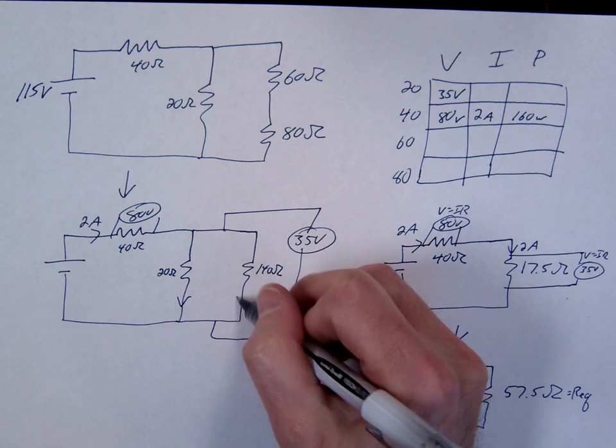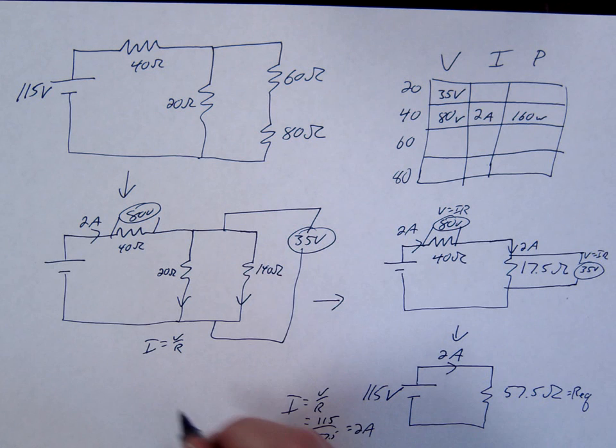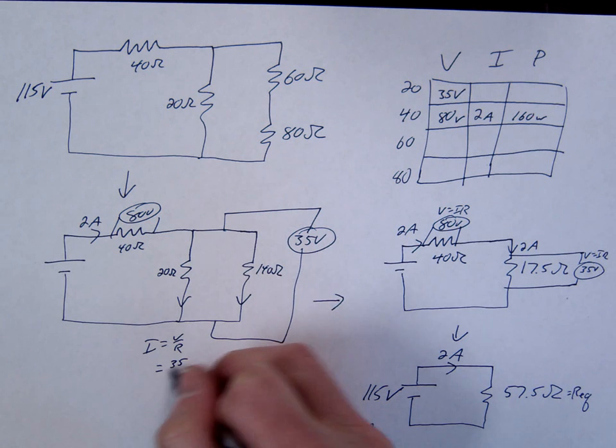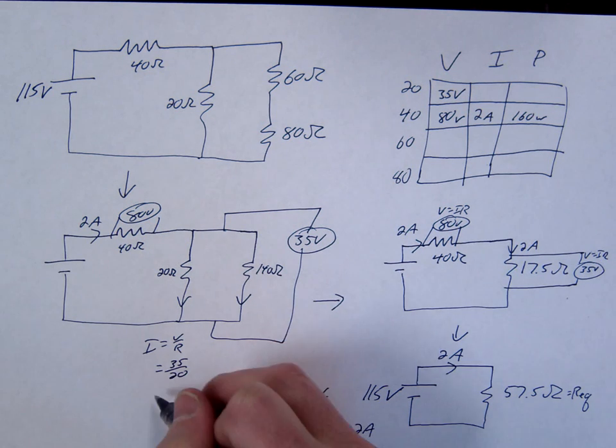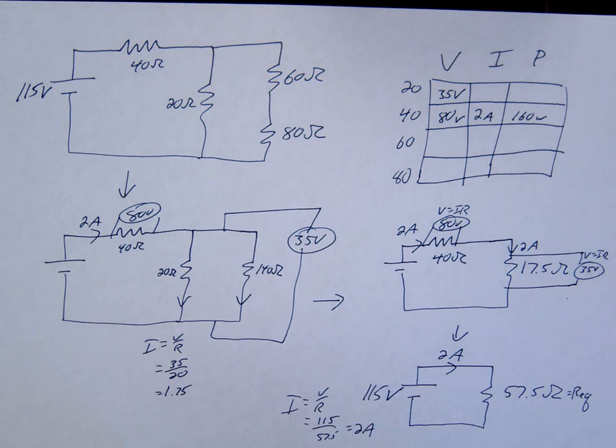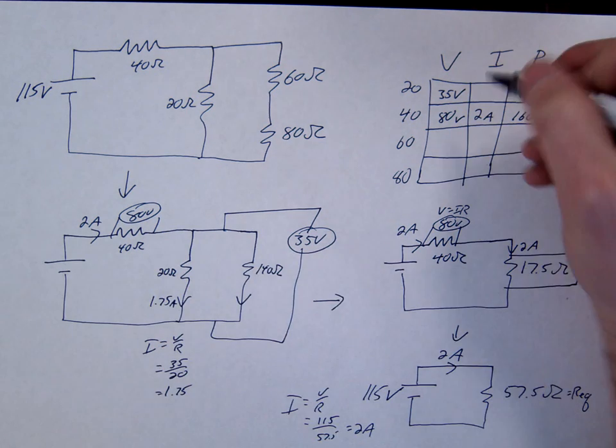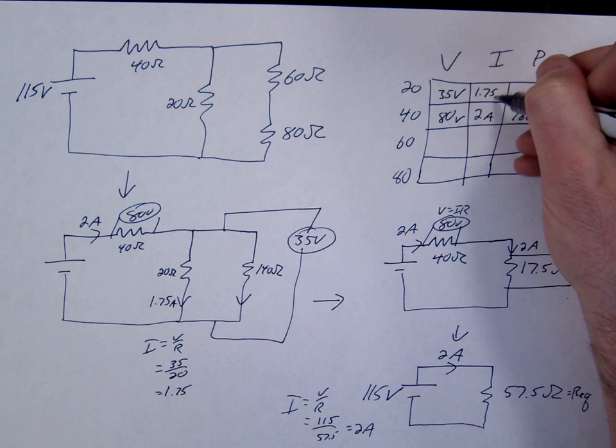We're missing the current through each branch. So we're going to use I equals V over R. We have 35 over 20, so that's 1.75. So that's 1.75 and I can fill that one in, 1.75 amps.